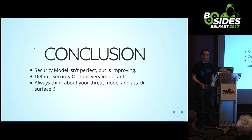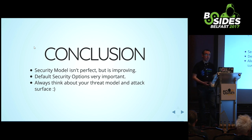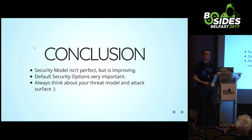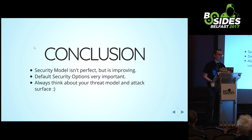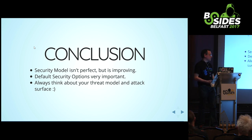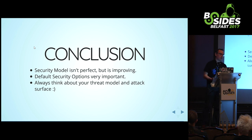In conclusion: Kubernetes is a really cool product. Older versions were really not very secure at all. Newer versions can be secured, but they may not be secure by default - you have to put effort into it. The default security options are super important. This is a complex product, and once you're running it in production people are unlikely to make major changes, so try to get pod security policy and network policy sorted out before you go into production. Always think about your threat model and attack surface - if you're worried about compromised containers, make sure the platform you're using is also worried about compromised containers.